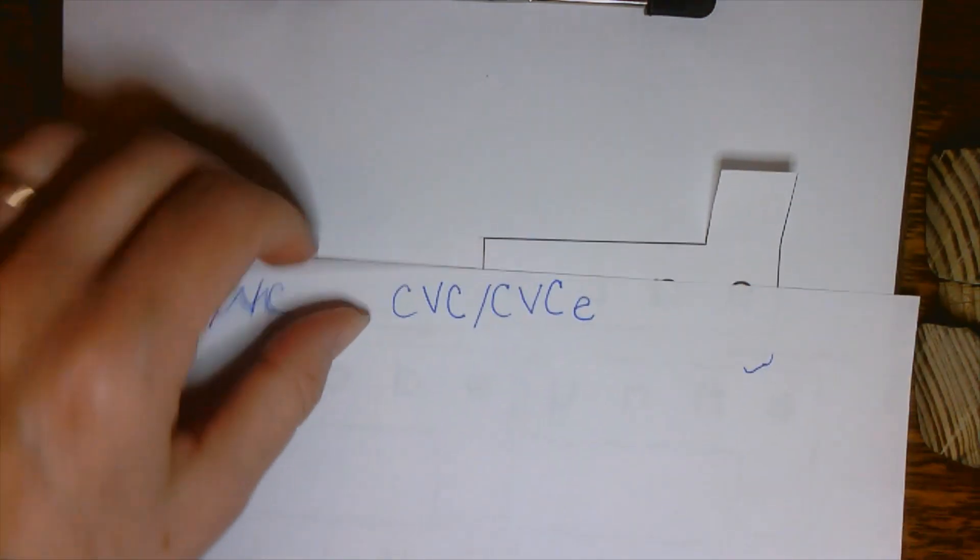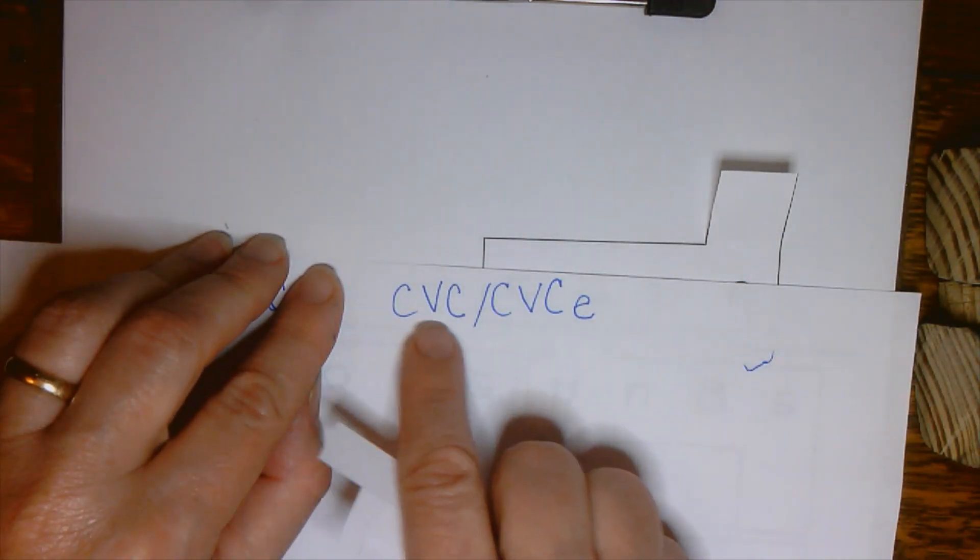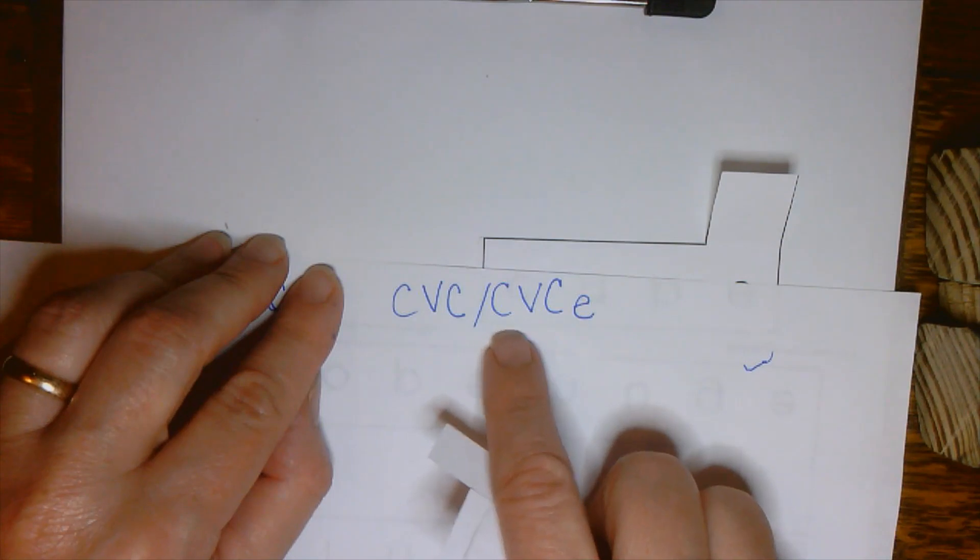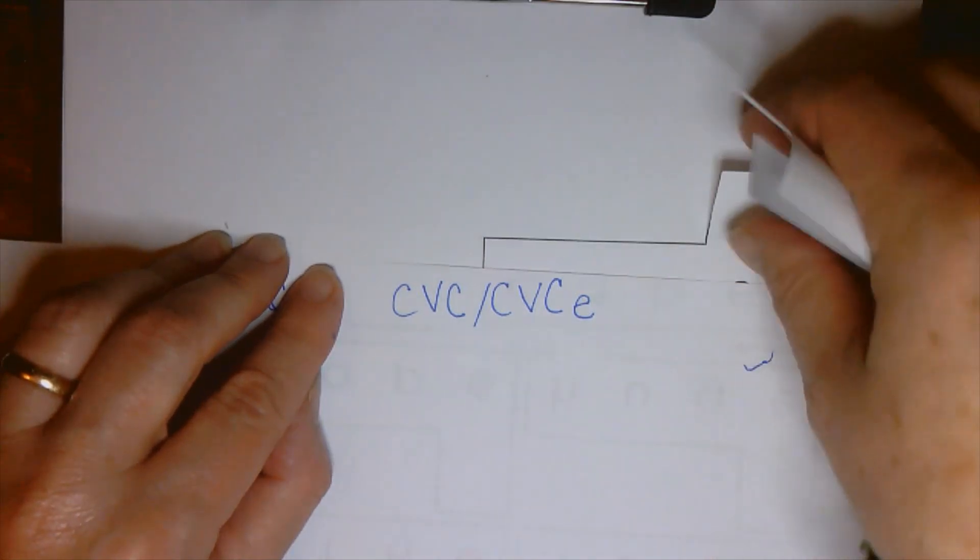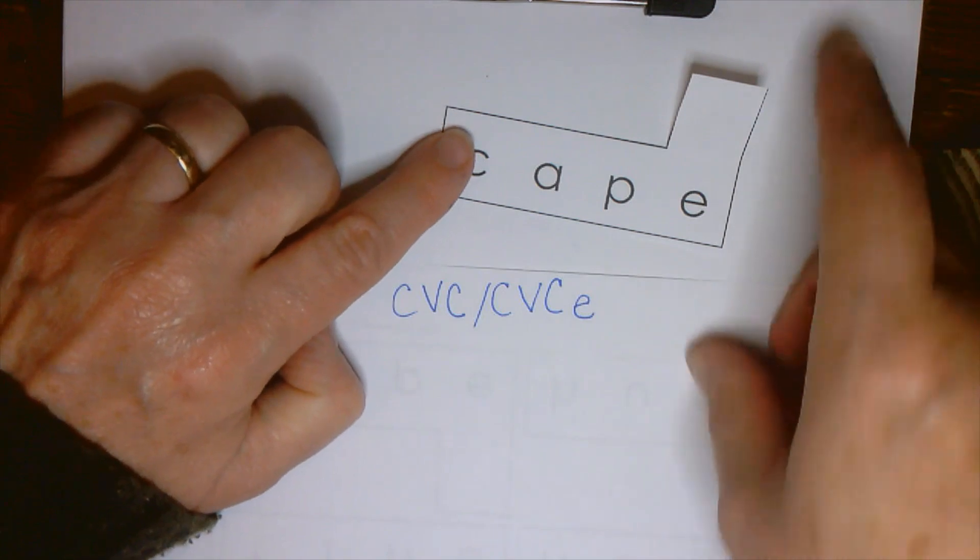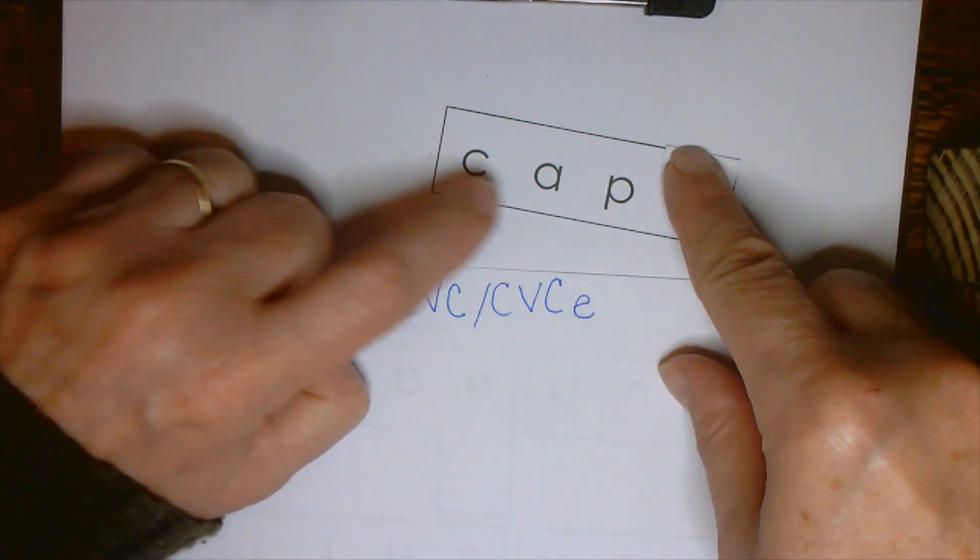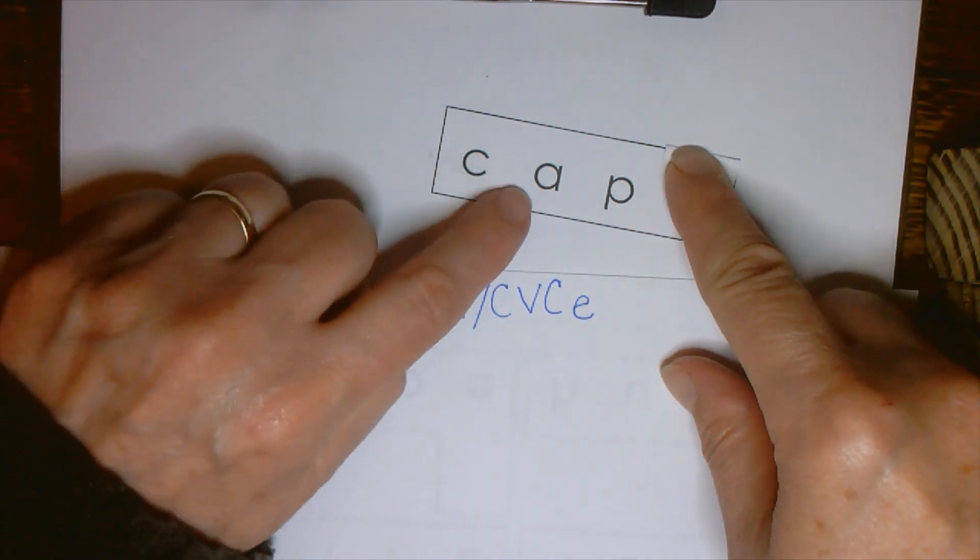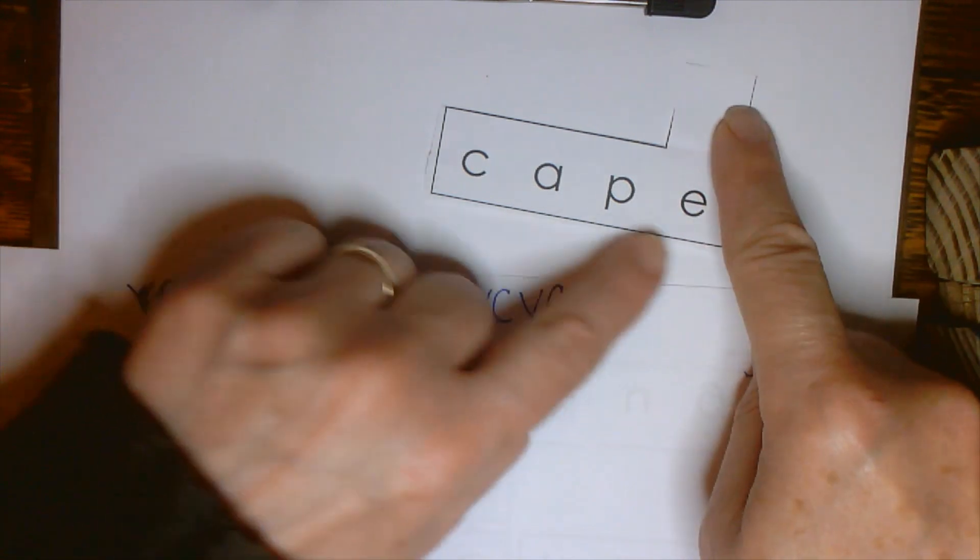That's why your bag has consonant, vowel, consonant, slash, consonant, vowel, consonant, e, because each of the words you put in there can be both. It can be a consonant, vowel, consonant word, or consonant, vowel, consonant, e.